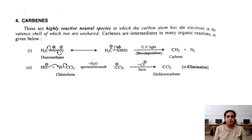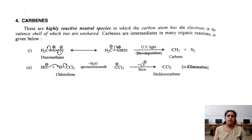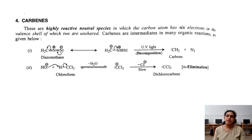First, let us consider the generation step. In this first example, chloroform is taken and treated with a base OH- to give dichlorocarbene. This is an important step in its formation. This dichlorocarbene is the intermediate in the Reimer-Tiemann reaction, in which phenol is converted into salicylaldehyde.